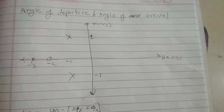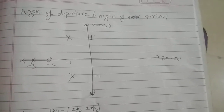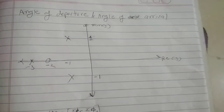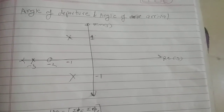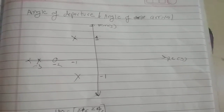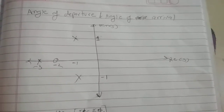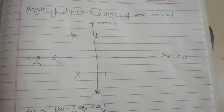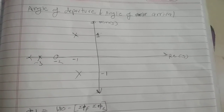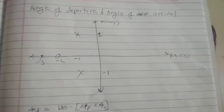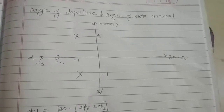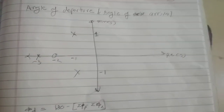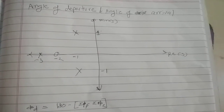Let us study what is angle of departure and angle of arrival. In root locus, whenever you encounter complex poles or complex zeros, you need to find angle of departure or angle of arrival. In the case of poles you need to find angle of departure, and in the case of zeros you have to find angle of arrival.